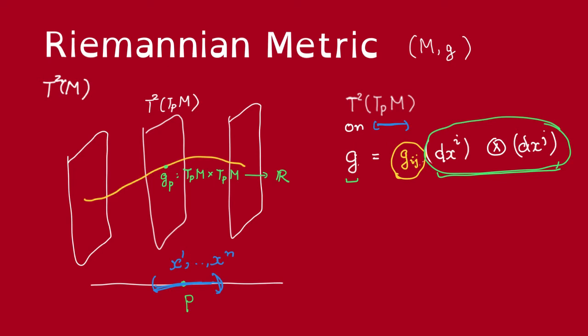So, now, everything on the right-hand side gets killed, except for the term with dx^i tensor dx^j. The left-hand side is just G of this, so we see that this coefficient must be equal to this.